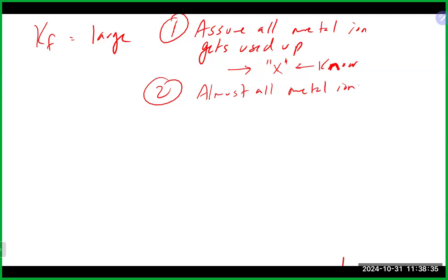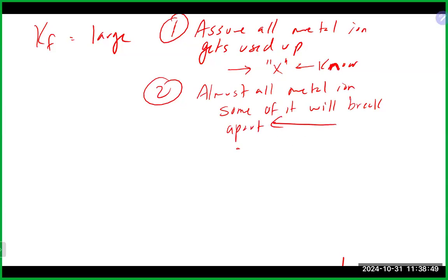The second assumption is that even though almost all of the metal ion gets used up, some of it will come back toward the reactant side. The amount that does — the concentration of the metal ion when it's all said and done — should be a really small number. If you end up calculating a fairly large number for the metal ion at equilibrium, you definitely went wrong somewhere in your calculation.